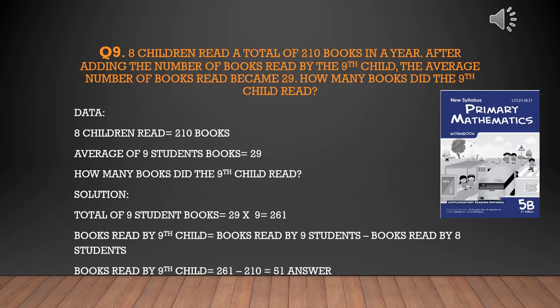The question is very specific — they are not asking how many books the eight students read; they are asking how many were read by the ninth child specifically. So first we will convert the average to the total: we multiply 29 by 9 students, and we find the total number of books read by the nine students, which is 261.